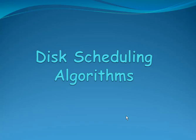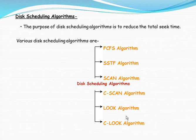In this video we are going to discuss one of the disk scheduling algorithms. The purpose of disk scheduling algorithms is to reduce the total seek time, i.e., the total distance moved by the disk head must be minimal. Various disk scheduling algorithms are available: FCFS, SSTF, SCAN, CSCAN, LOOK, and CLOOK.